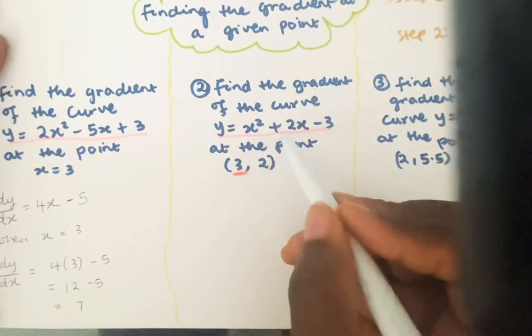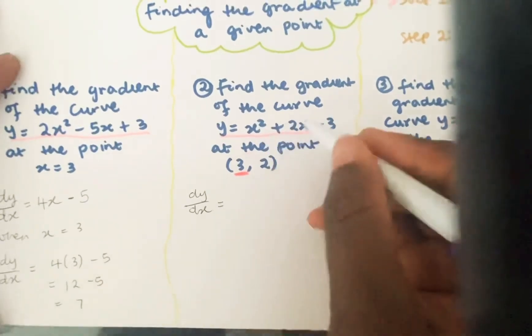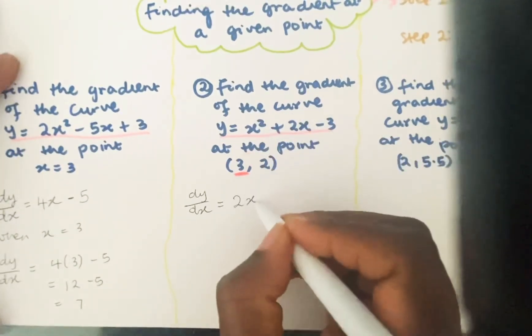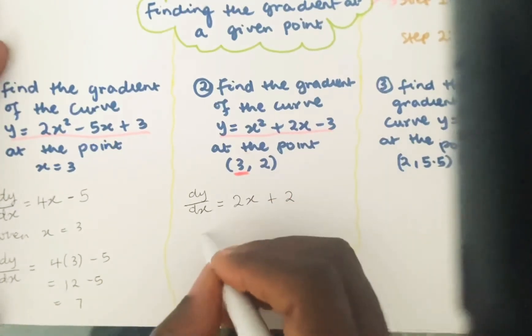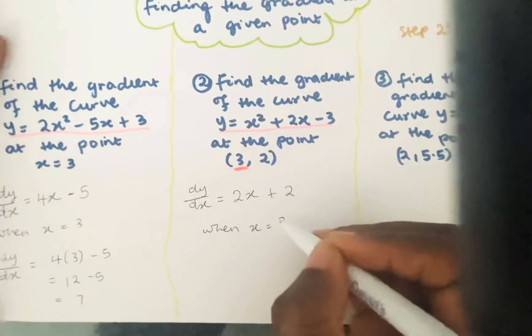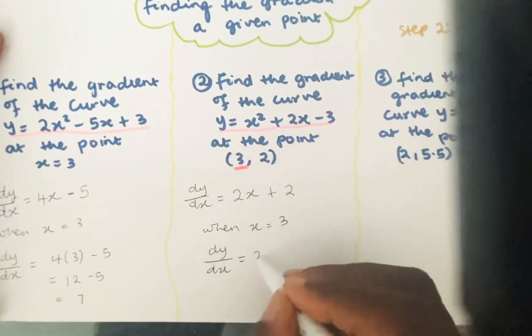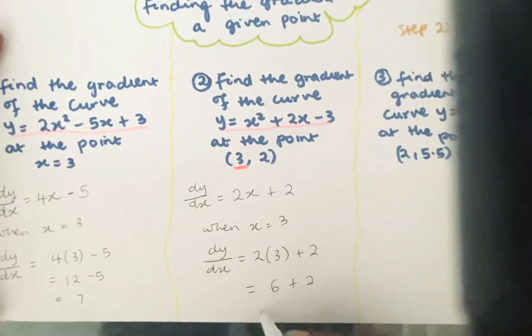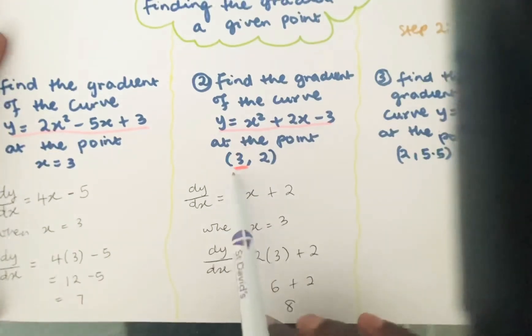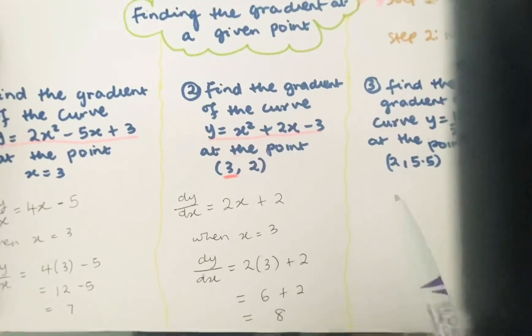So if y is equal to x squared plus 2x minus 3, then dy by dx would be equal to 2 times 1 would be 2x plus 2. Then when x is equal to 3, dy by dx would be equal to 2 times 3 plus 2. That's going to give you 6 plus 2, which is equal to 8. I know I'm using x equals 3, but it can be any number. I've used it here and I've used it here, but it can be any number. In the next example, I'm going to use a different number so you see that it can be any number.